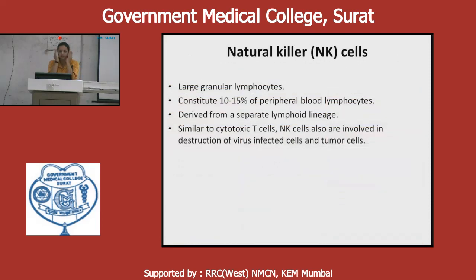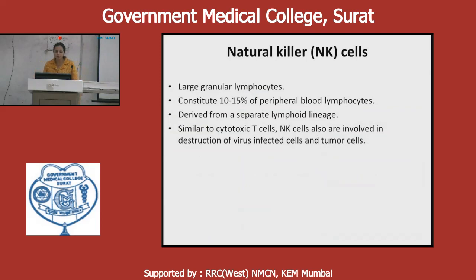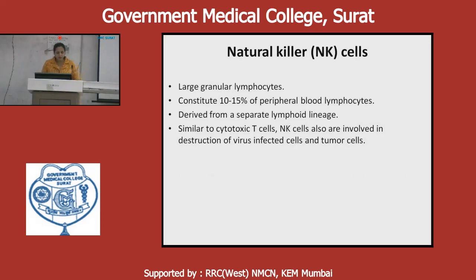Natural killer cells are large granular lymphocytes important in both innate and adaptive immunity. They constitute 10–15% of peripheral blood lymphocytes, are derived from a separate lymphoid lineage, and are similar in function to cytotoxic T cells.